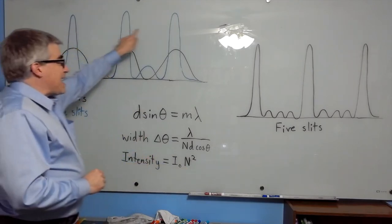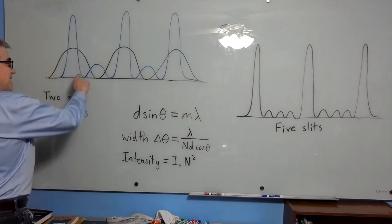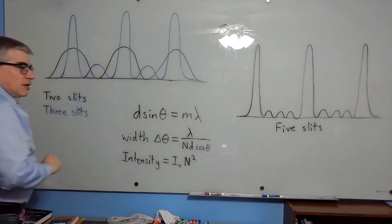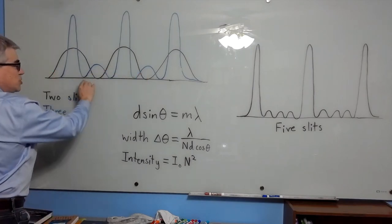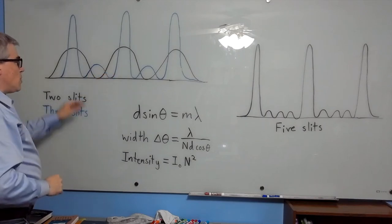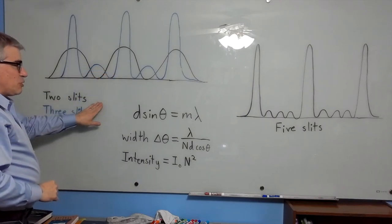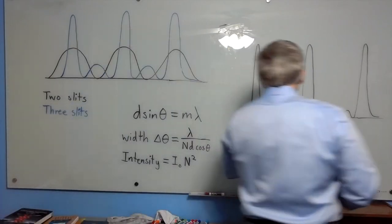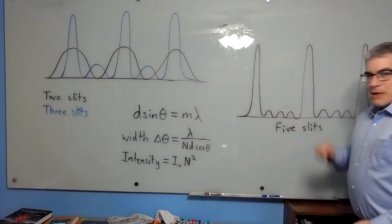Those are called the primary maxima. You'll also get secondary maxima in between. If you go up to n, there's n minus two of them in between. So when you're using three slits, there's one secondary maximum in between. When you're doing five slits, there's three secondary maxima in between.